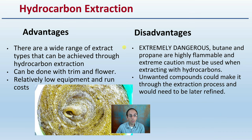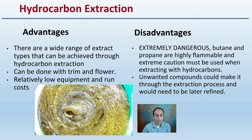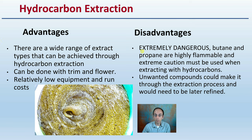The last method is hydrocarbon extraction. This offers a wide range of extract types and can be done with trim and flower at relatively low equipment and run costs. However, it is extremely dangerous — butane and propane are highly flammable, and extreme caution must be used. Unwanted compounds can also complicate the extraction process and would require later refinement.